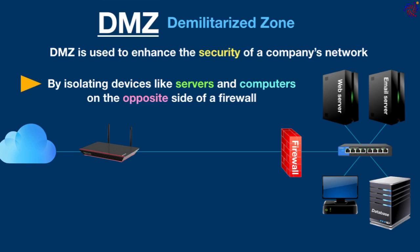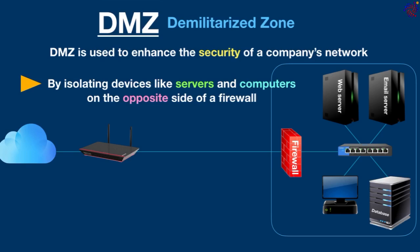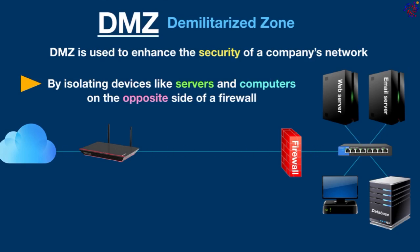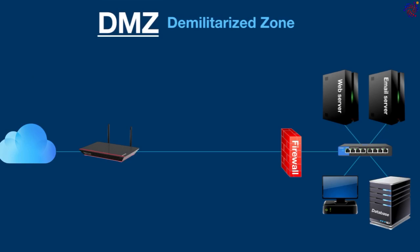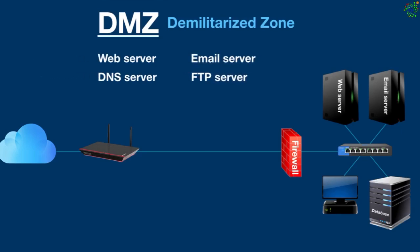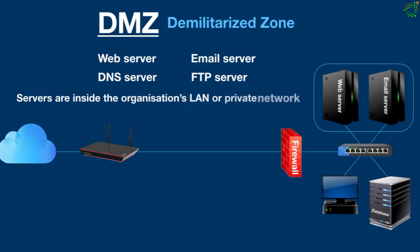Let's take an example for a better understanding. Here we have a network that belongs to an organization, and this organization has devices such as computers and servers behind a firewall. These servers need to be accessed by public users from the internet so the organization can stay in touch with business. For instance, these servers can be a web server, email server, DNS server, FTP server, and so on. These servers are behind the organization's firewall — in simple words, they are inside the organization's local area network or private network.